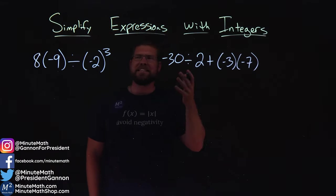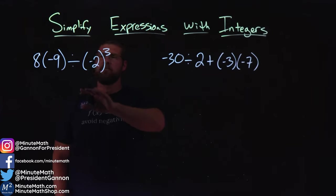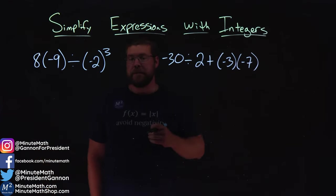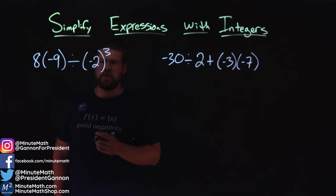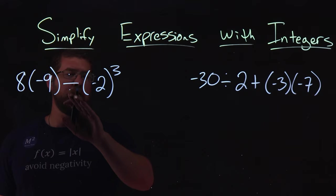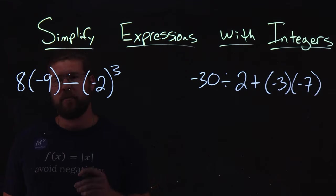We're given these two examples here, and we're going to simplify these expressions with integers to show our order of operations. Let's start with the left one first. We have some multiplication going on here, then division, then we have parentheses and exponents.